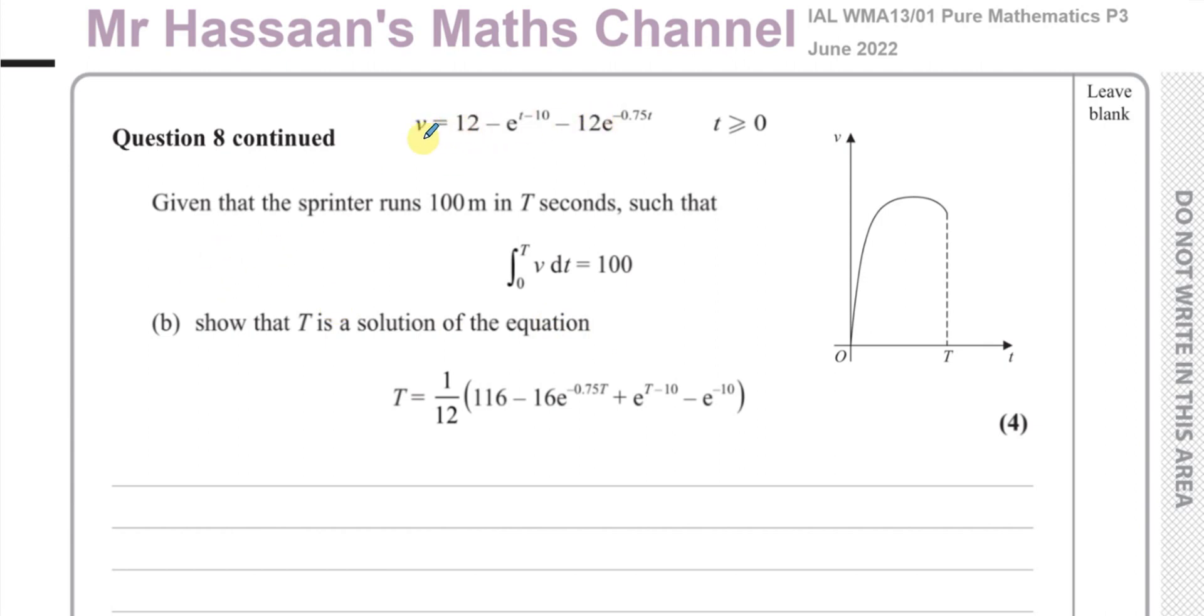We were given this equation for the velocity reached by a sprinter running 100 meters race. Part A we had to find the maximum velocity he reached using differentiation. Now it's telling us that the sprinter runs 100 meters in T seconds.